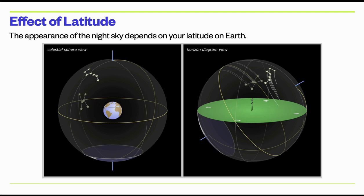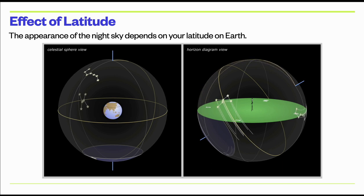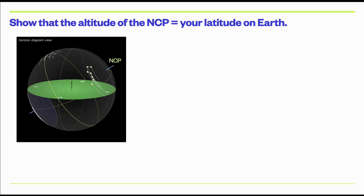Let's look at the effect of latitude on the night sky. The diagram shows the Earth turning under a fixed celestial sphere on the left, and on the right, what the night sky appears to do from our moving reference frame on Earth's surface. It turns out that the altitude of the north celestial pole equals your latitude on Earth. Altitude is the angle a star is above the horizon — we'll call this angle alpha — and that angle equals your latitude.